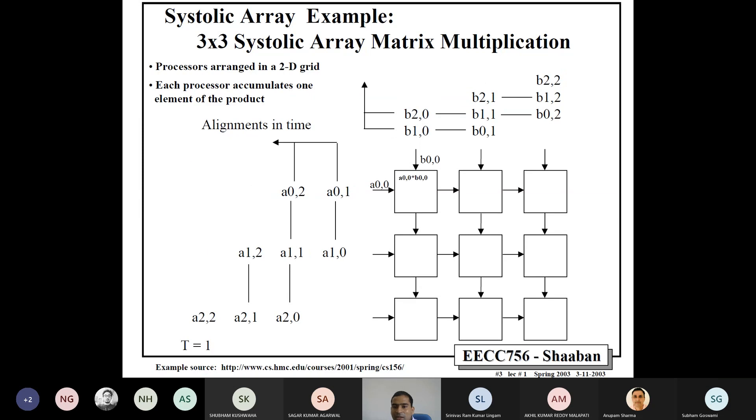So, at time t equals to 1, only one multiplication is performed. So, a0,0 comes here, b0,0 comes here, you multiply them here. So, at this t equals to 1, other eight PEs, they are not used. They do not do any computation because of this special alignment in time.